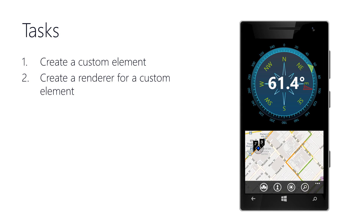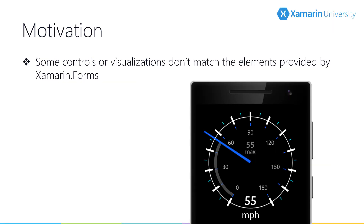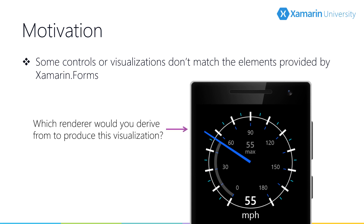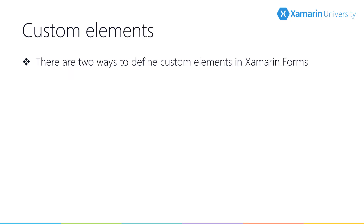In this section, we'll create a custom element and then create the platform-specific renderers to visualize a new type. Xamarin Forms is great, but it doesn't encapsulate every control type. It's very likely you'll reach the limits of the provided elements and decide you have to define your own. For example, if we look at the gauge or speedometer control shown here, can you think of an existing Xamarin Forms element appropriate to extend to create this visualization? Probably not. We have two ways to create custom elements: derive from an existing element such as a button or label, or derive from a View.